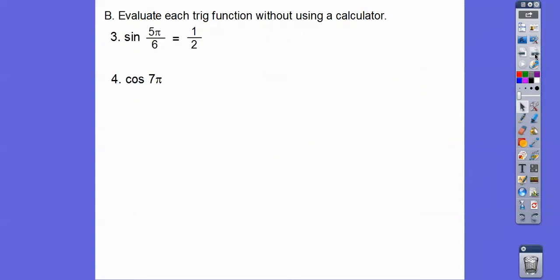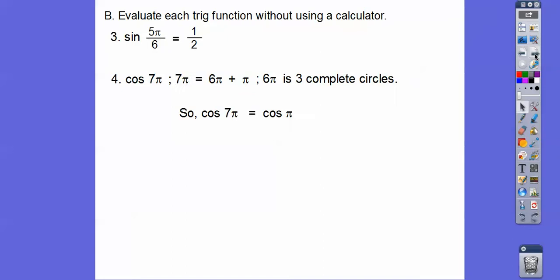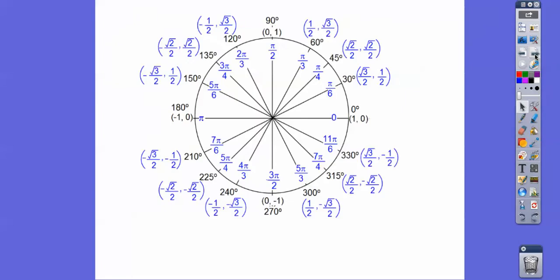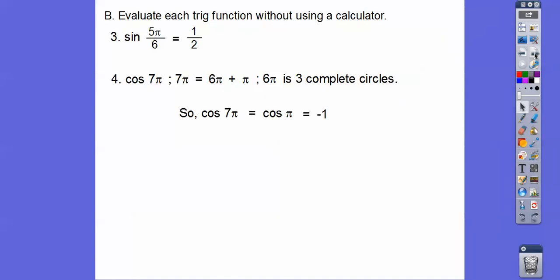How about the cosine of 7π? The cosine of 7π is the same as 6π plus π. Since 6π is three full circles, that reduces to the cosine of π. Looking at the unit circle, the ordered pair at π is (−1, 0), so the cosine of 7π is negative 1.